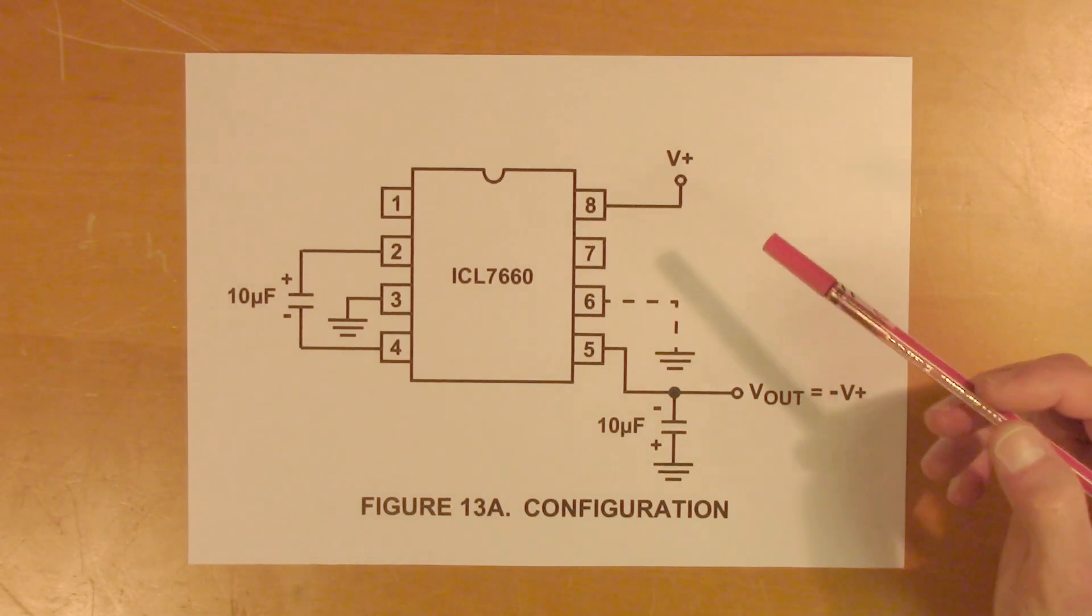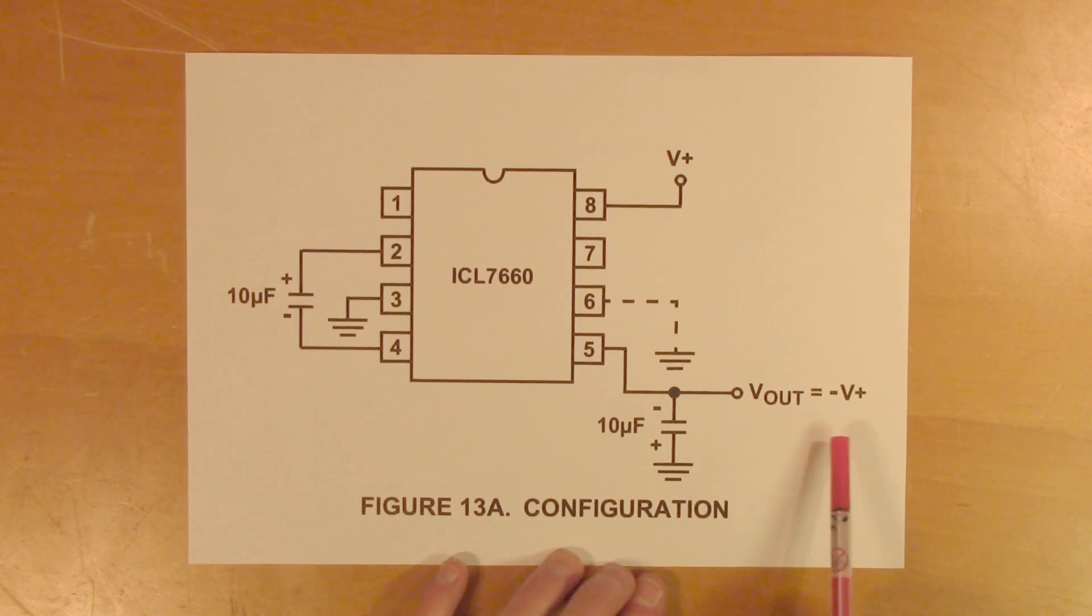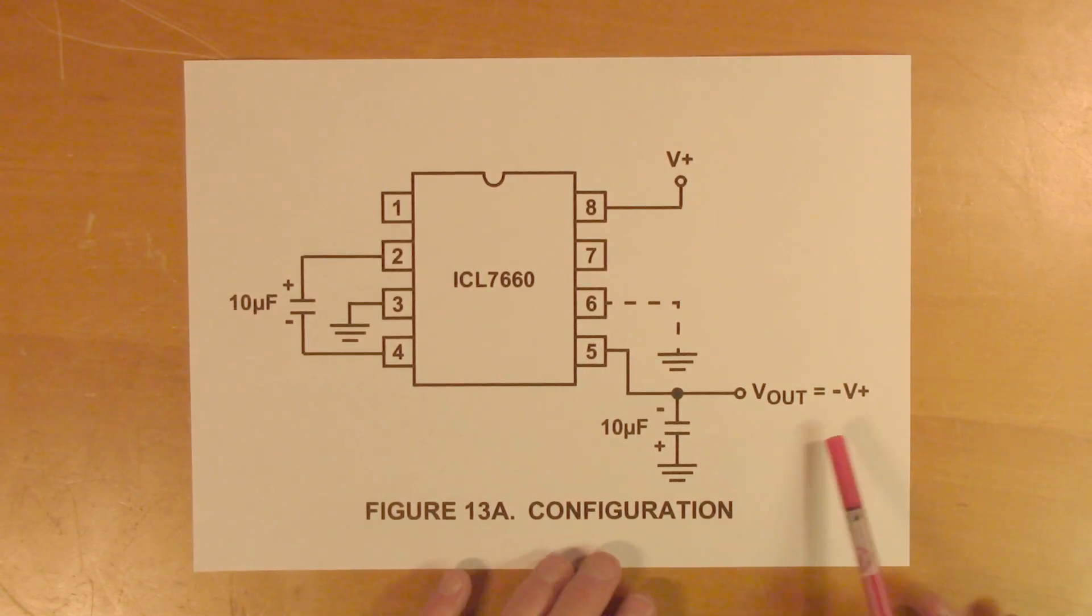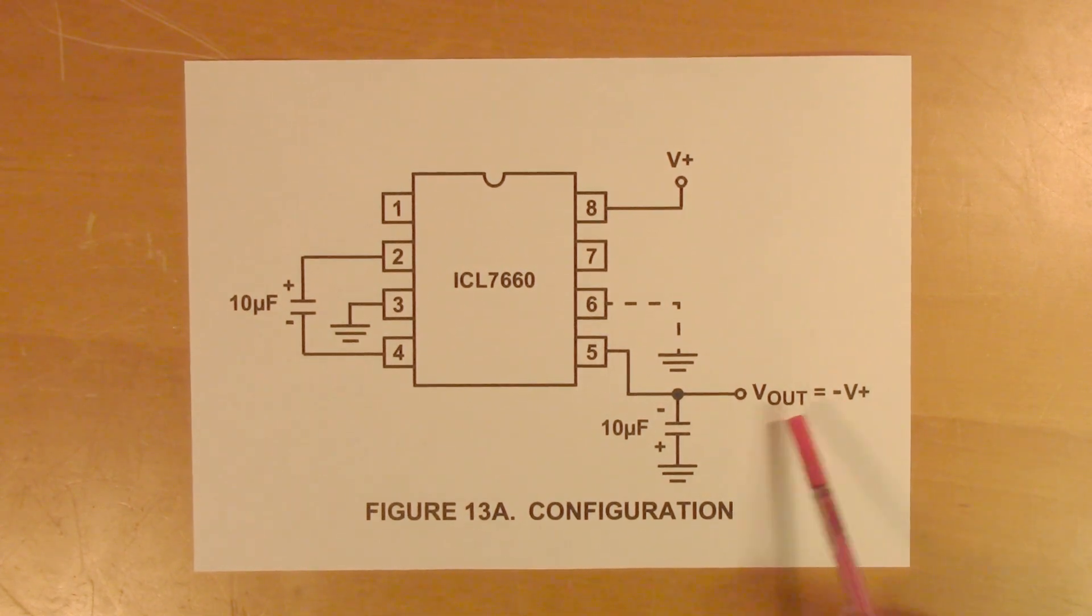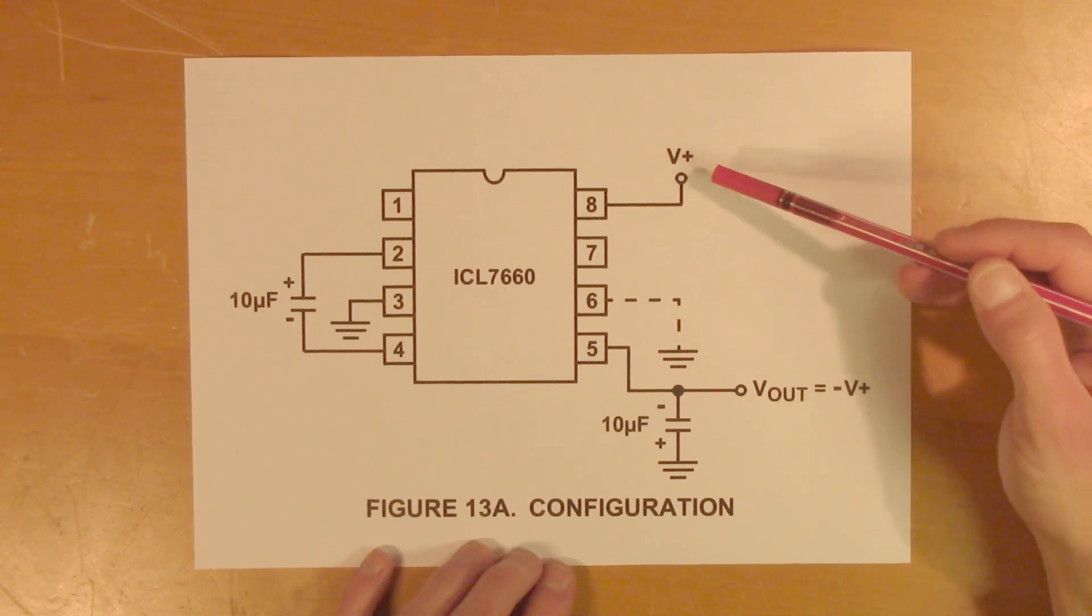So instead, I would suggest that you start with reading the Vout voltage with a multimeter. If you have the correct output voltage here, then it's obviously something else in the circuit that's wrong. If you don't have the correct output voltage, you measure the input voltage to see if that is correct.